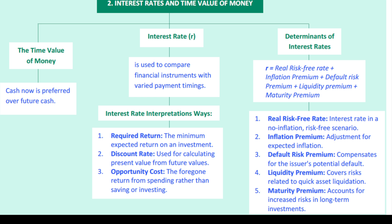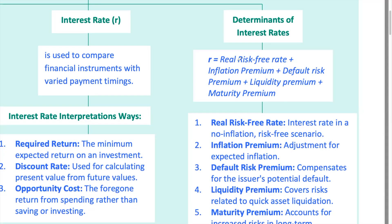Interest rates are made up of several components. Number one is the real risk-free interest rate — the return on a risk-free investment with no expected inflation. Number two is the inflation premium, compensation for the loss of purchasing power due to inflation. Number three is the default risk premium, compensation for the risk that the borrower might default. Number four is the liquidity premium, compensation for the hassle of selling the asset without taking a hit on the price. Number five is the maturity premium, compensation for the risk associated with holding a long-term investment. These five components all come together to form the total interest rate.